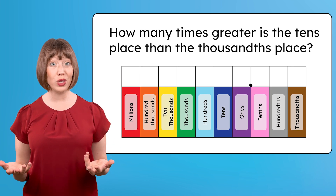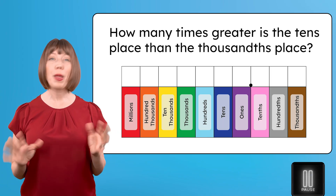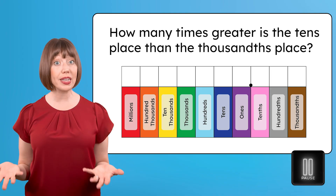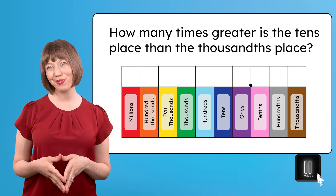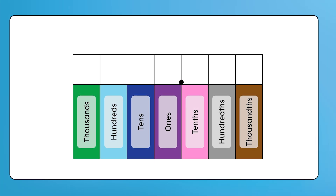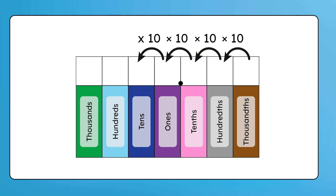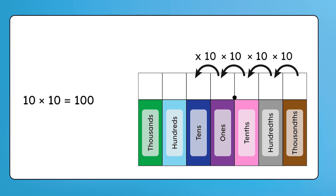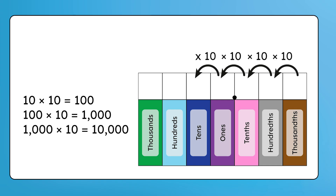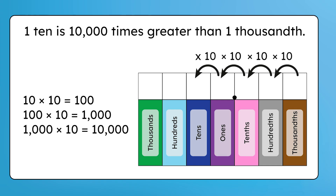How many times greater is the value of the tens place compared to the thousandths place? Pause here to apply that pattern. Use the place value chart or multiplication to help you figure it out. Starting in the thousandths place, we move one place to the hundredths — that's ten times greater. Then to the tenths, the ones, and finally to the tens place. That's four place value positions to the left, so we multiplied by ten four times. Ten times ten is one hundred, one hundred times ten is one thousand, and one thousand times ten equals ten thousand. That means one ten is ten thousand times greater than one thousandth.